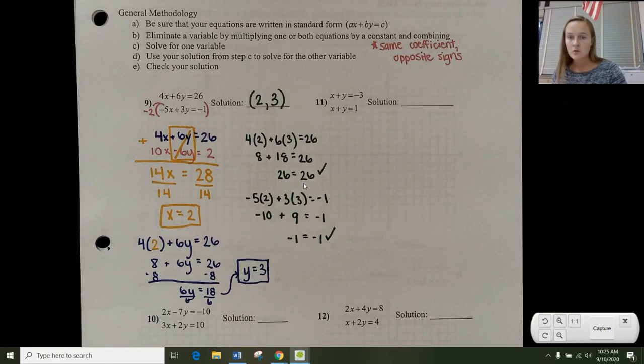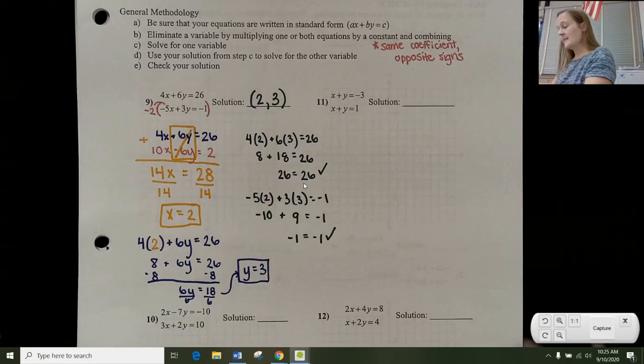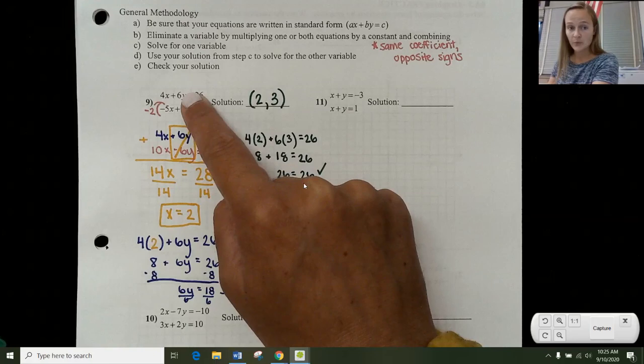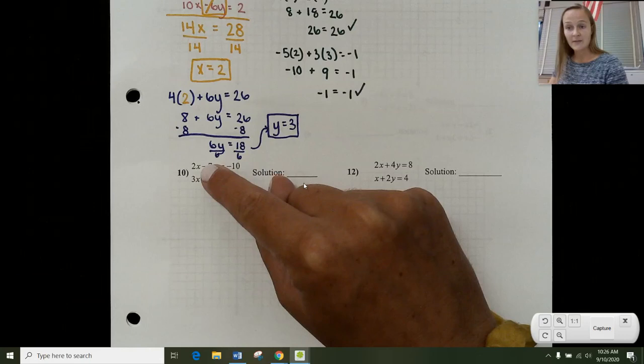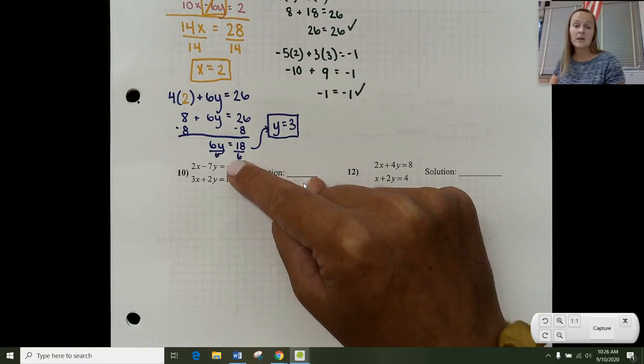So I'm going to do one more example here. And I'm actually going to scoot down to number 10 below, because that's a different process a little bit in the sense that you can't just multiply one equation. You're going to need to multiply both equations. So in this situation, we only had to multiply the bottom equation because 3 goes into 6. So 3 goes into 6 by a multiple of 2. In the bottom, number 10, 3 and 2, neither one goes into each other. And 2 and 7, neither one goes into each other.